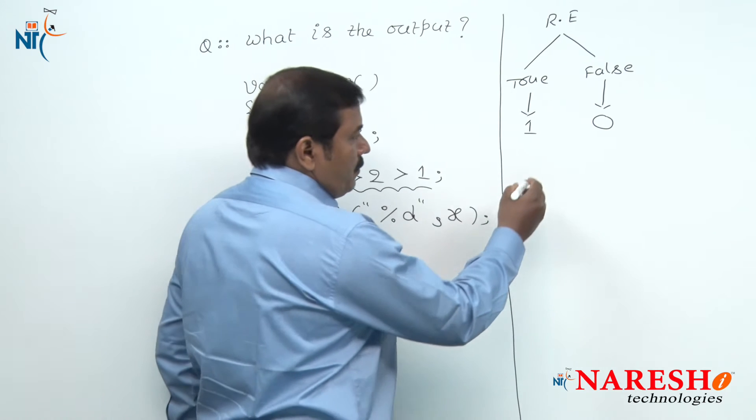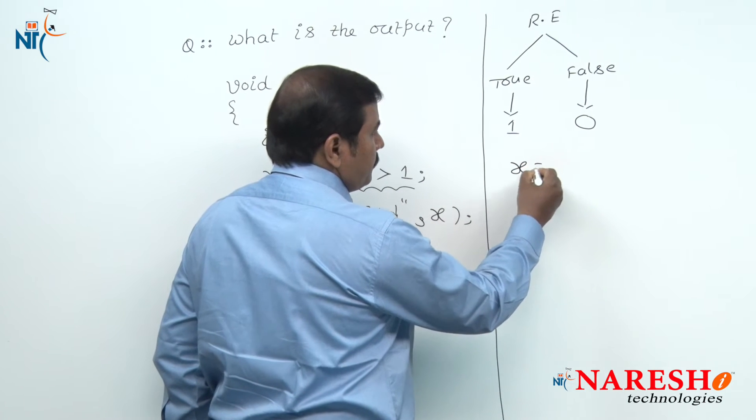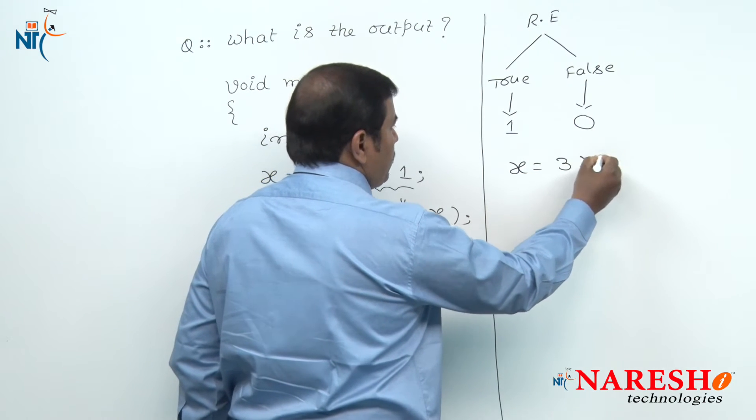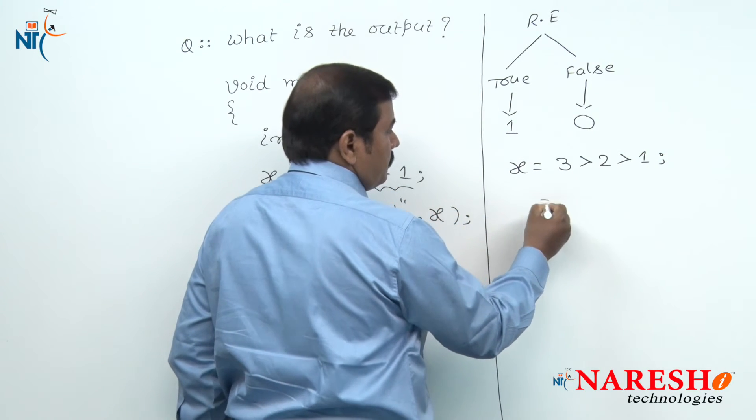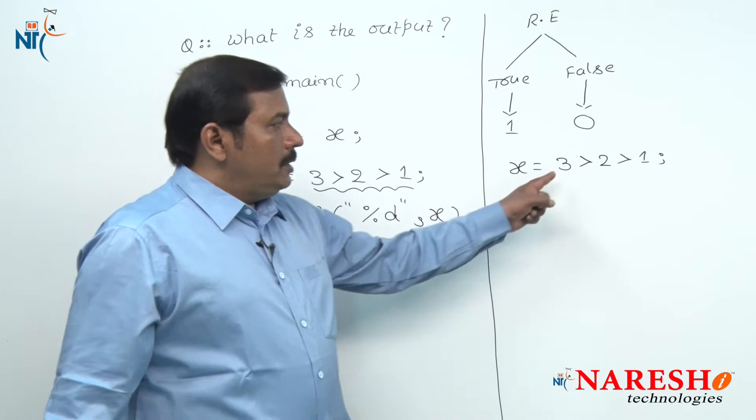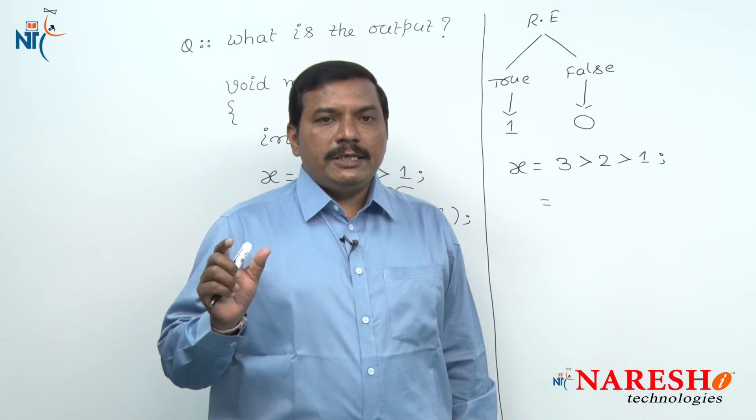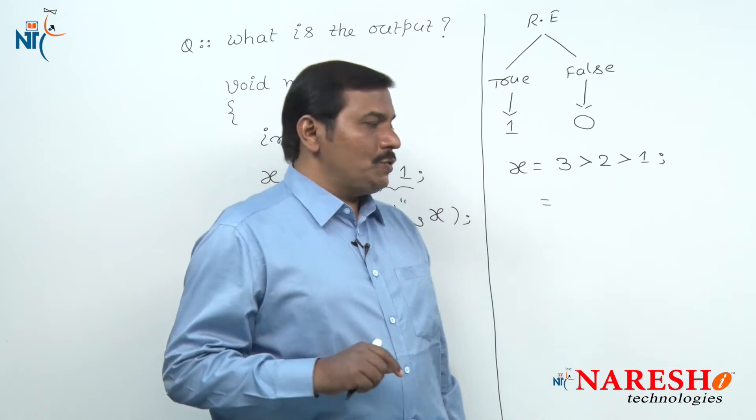Let us watch the evaluation of this relational expression. 3 is greater than 2, 2 is greater than 1. These relational operators have left to right associativity.